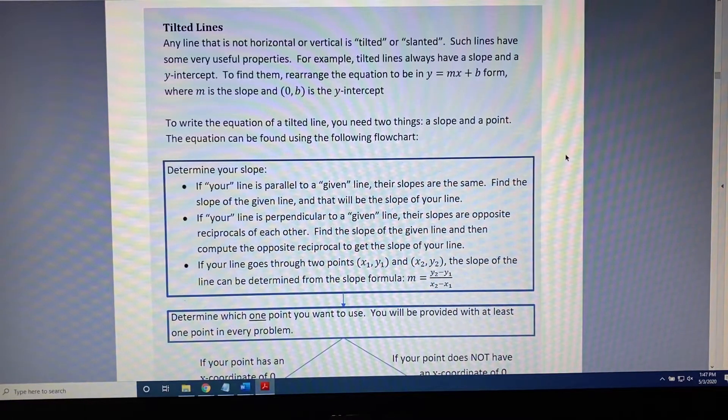The topic of this video is properties of tilted or slanted lines. Any line that is not horizontal or vertical is tilted or slanted. Such lines have some very useful properties. For example, tilted lines always have a slope and a y-intercept.